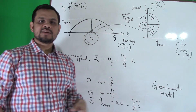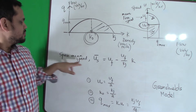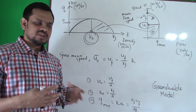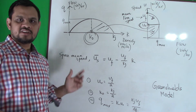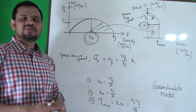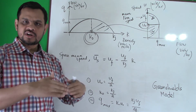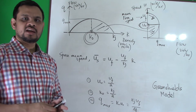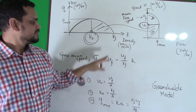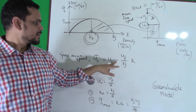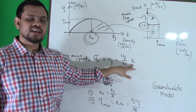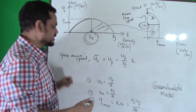Greenshield gave us a model. His model uses space mean speed — any speed used in traffic engineering is space mean speed. Space mean speed is total distance traveled divided by total time taken. The model defines: us equals uf minus (uf divided by kj) times k, where uf is mean free speed, kj is jam density, and k is the normal density.